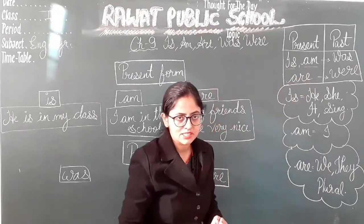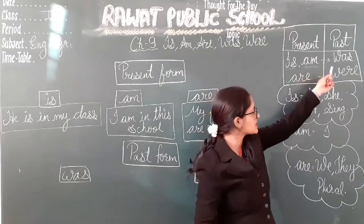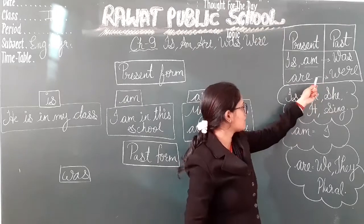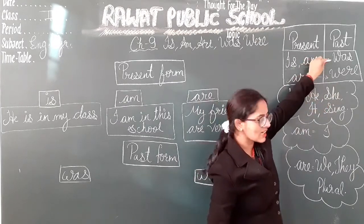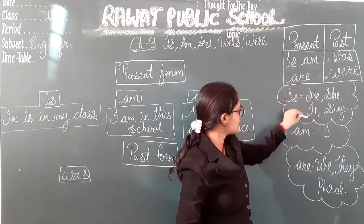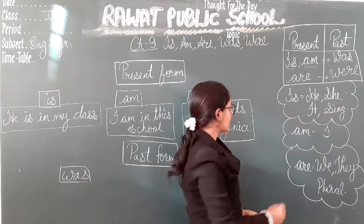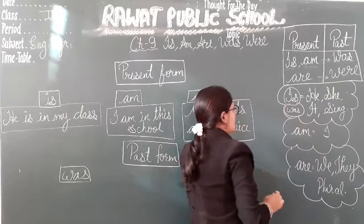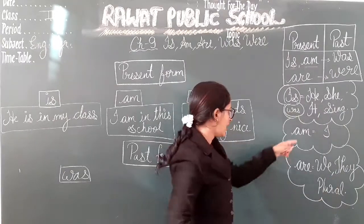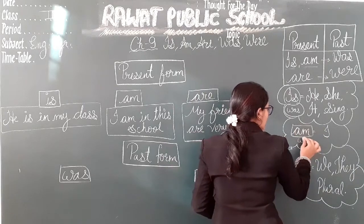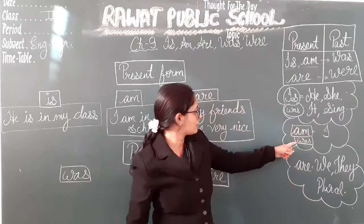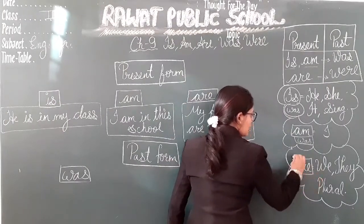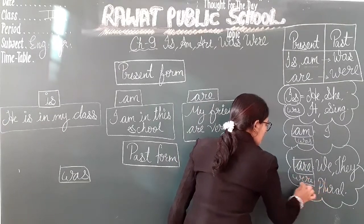So to summarize: is and are are the present forms. The past form of is is was, and the past form of are is were. We use is or was with he, she, it — singular subjects. We use are or were with plural subjects. I am in the present, and I was in the past.